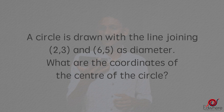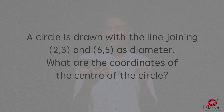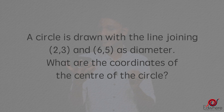I will take the same problem. A circle is drawn with the line joining 2, 3 and 6, 5 as diameter. What are the coordinates of the center of the circle? The two points are 2, 3 and 6, 5.